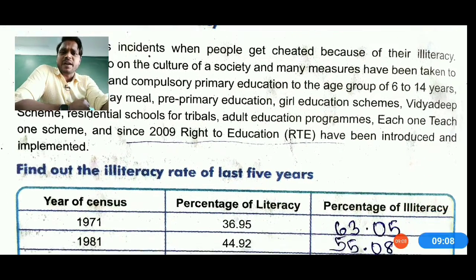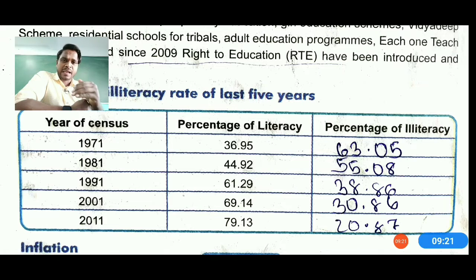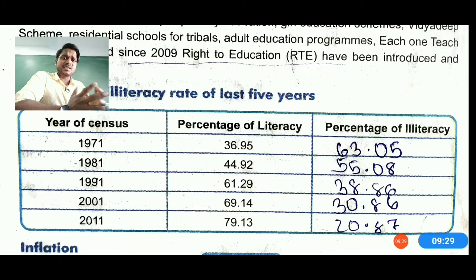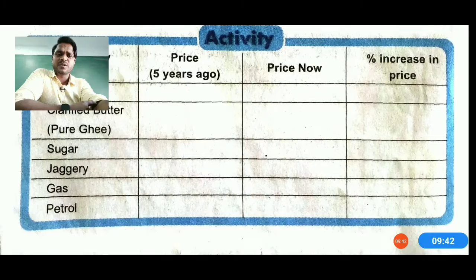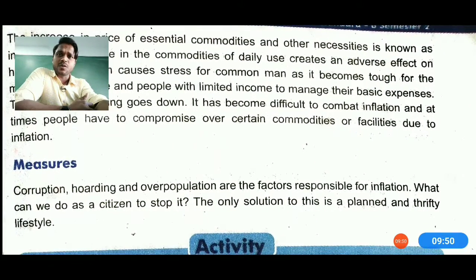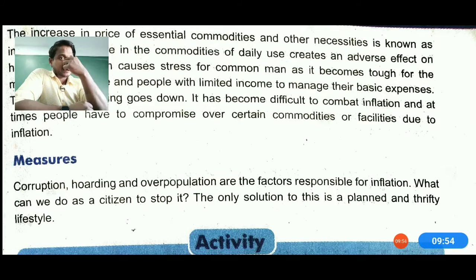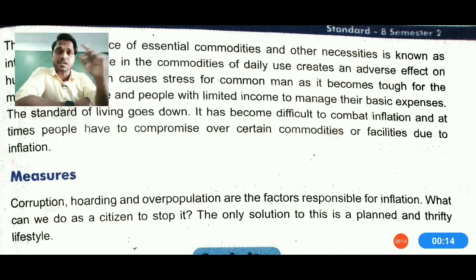Looking at the literacy rate over the last five years: in 1971, the literacy rate was about 36.95%, meaning illiteracy was 63.05%. By 2011, the literacy rate improved to 79.13%, with illiteracy at 20.87%. This shows the progress made. Regarding inflation — the increase in the price of essential commodities and other necessities is known as inflation. It has become difficult for people to manage their needs due to inflation.